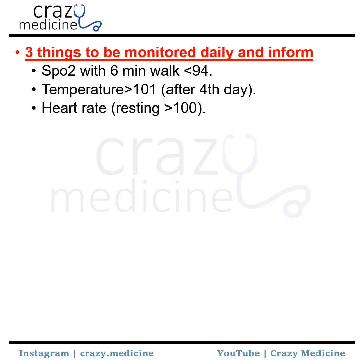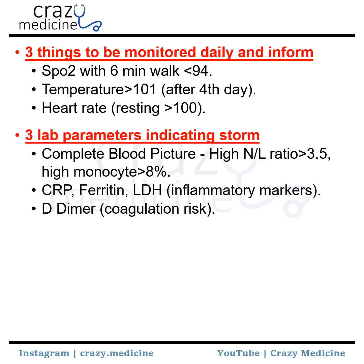Then, three lab parameters indicating cytokine storm. First, complete blood picture with high neutrophil-to-lymphocyte ratio — more than 3.5 — and high monocytes — more than 8%. Then inflammatory markers like CRP, ferritin, and LDH. Then D-dimer, which suggests the coagulation risk. The importance of D-dimer is also discussed later in this video.